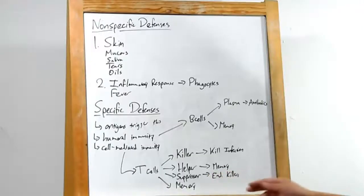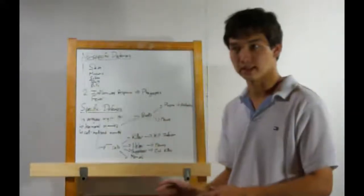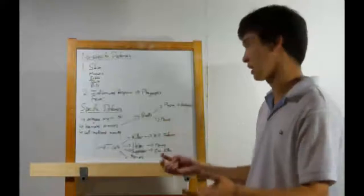Then we have the suppressor T cells. Once the infection is coming under control, they'll start suppressing the killer cells, because otherwise they'll go on a rampage and kill everything else.